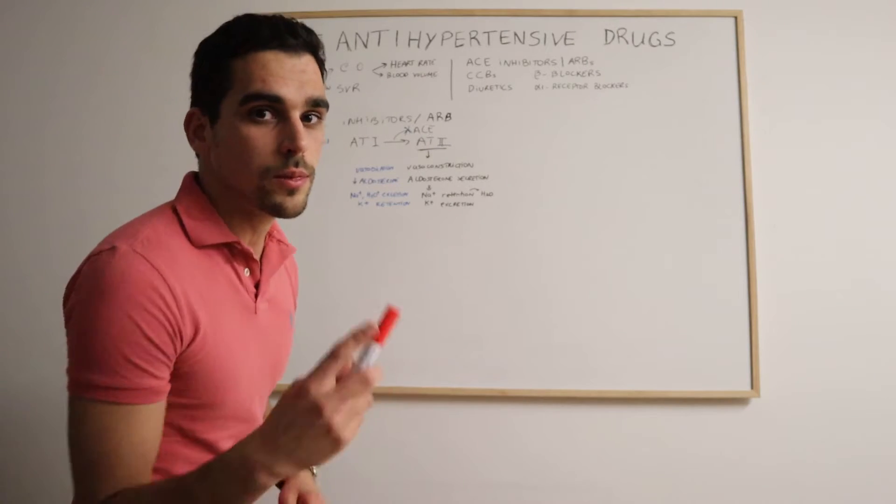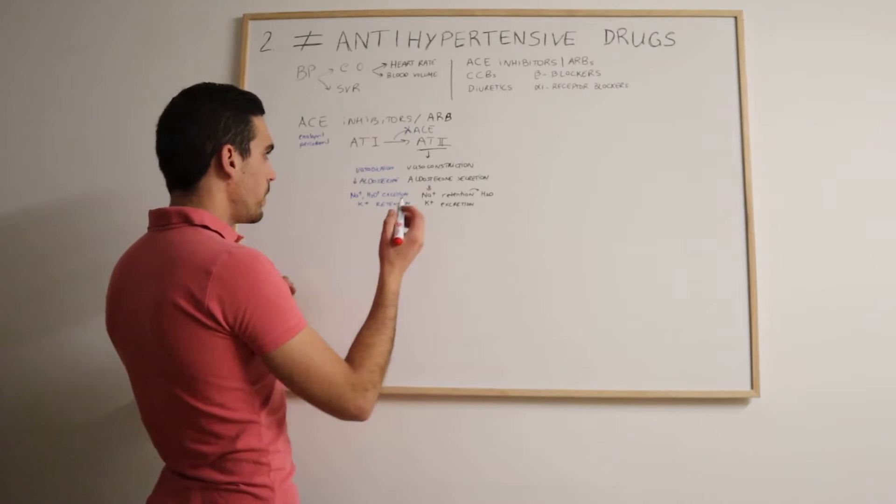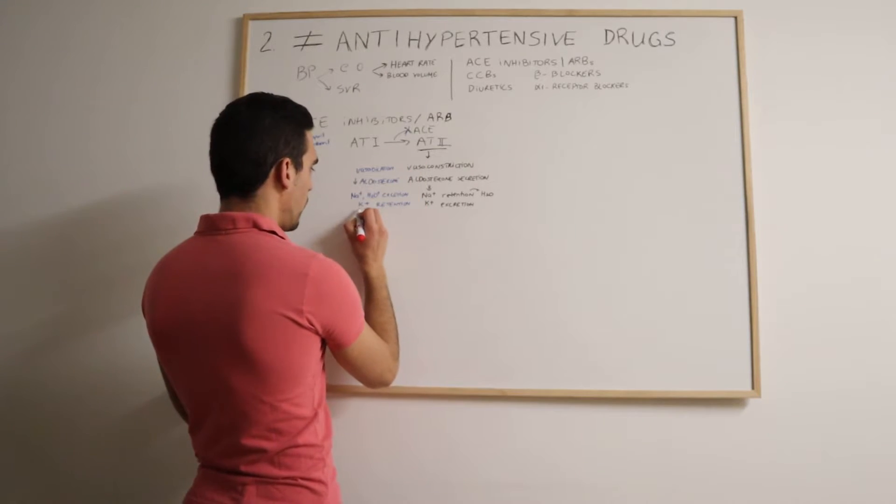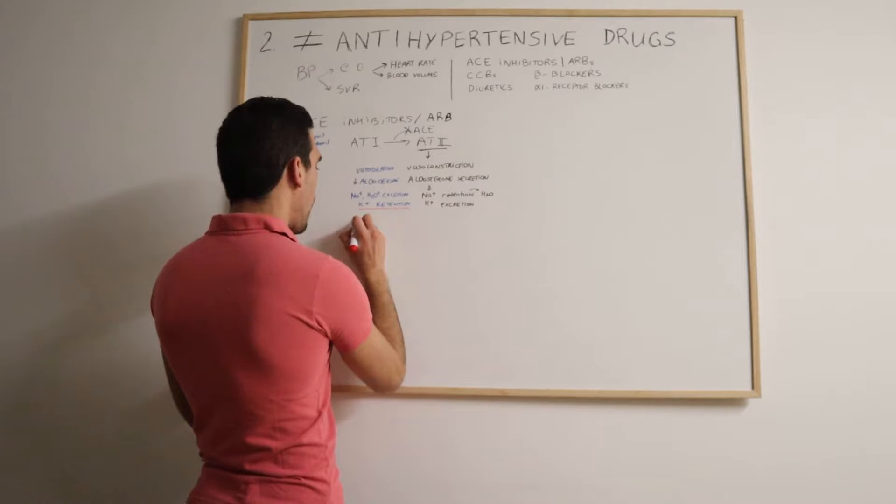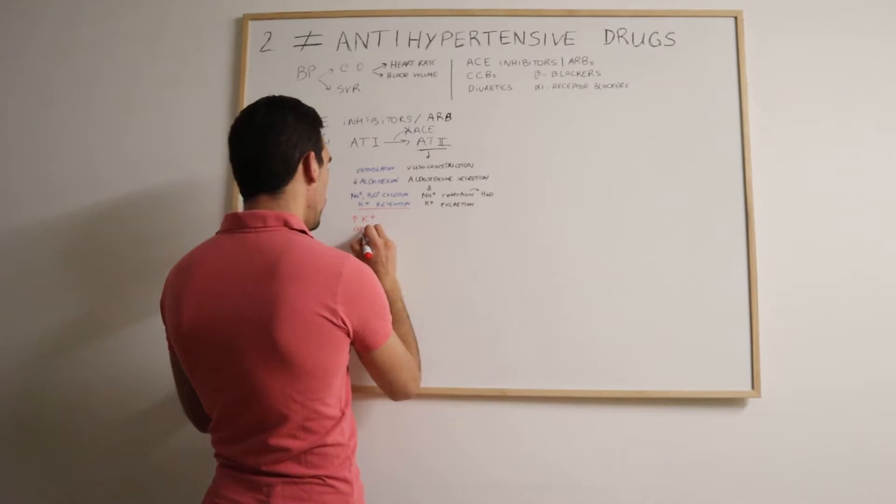But they also have some side effects. The ACE inhibitors and the ARBs can cause, as we see here, hyperkalemia, high potassium. They can also cause angioedema.